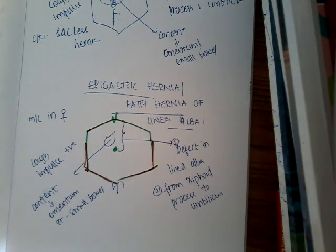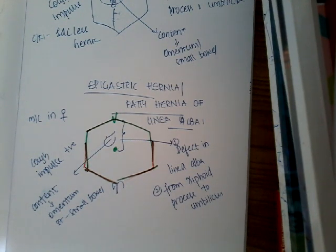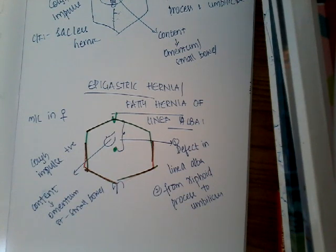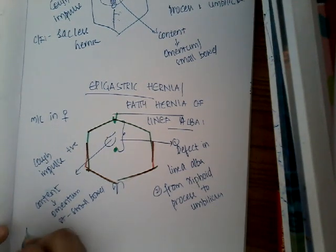Sometimes it can also contain small bowel. There is a swelling in the epigastric region; sometimes the patient presents with pain and sometimes there is no pain. It may also be associated with peptic ulcer disease. Only if there are complications like irreducibility, obstruction, or strangulation will features like vomiting, toxicity, and abdominal distension be seen. Otherwise, mostly they are symptomless with only swelling and some discomfort or dragging pain.